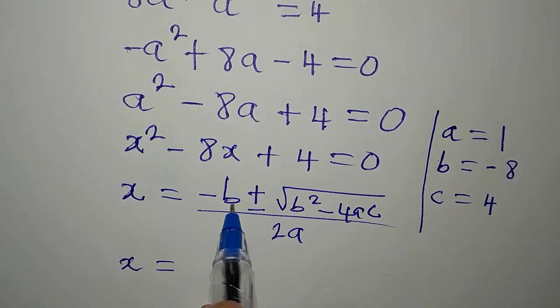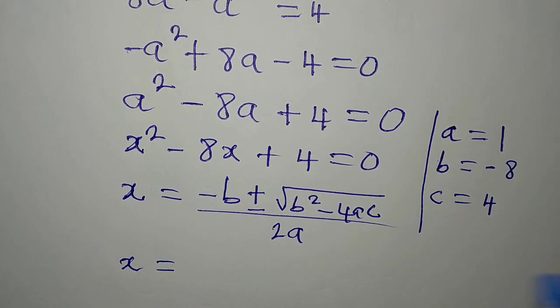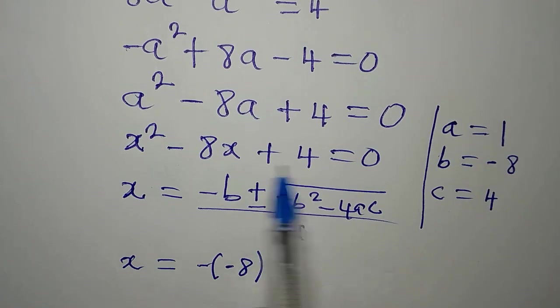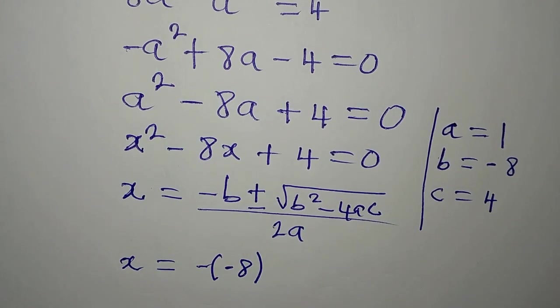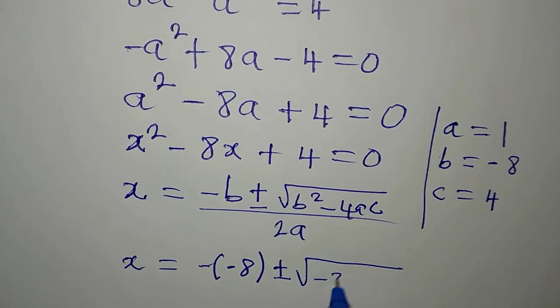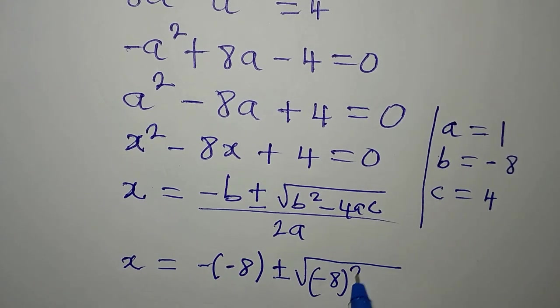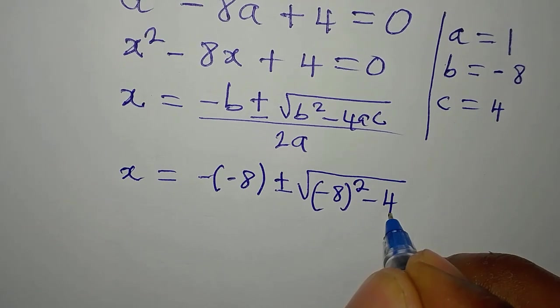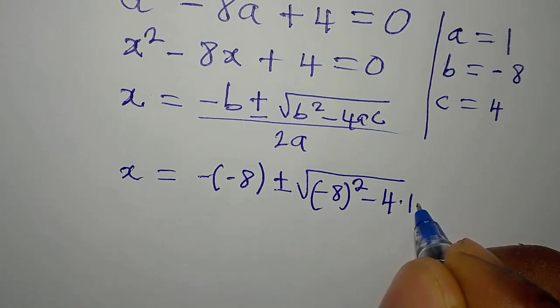Now, X here is equal to minus B. What is minus B? We are going to have minus minus 8, because B itself is minus 8. Then plus or minus, we have square root of minus 8 in brackets, you square this, then minus 4 times A times C.